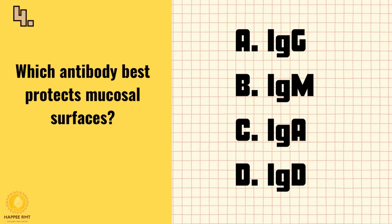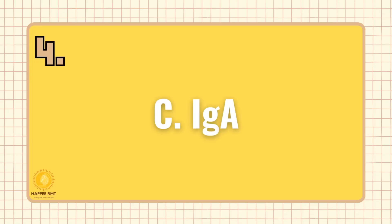Number 4. Which antibody best protects mucosal surfaces? A. IgG. B. IgM. C. IgA. D. IgD. Answer is C: IgA.